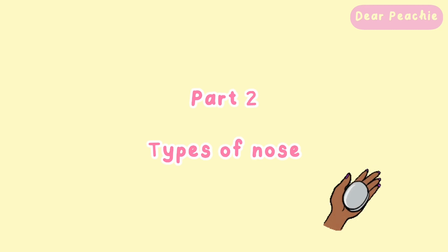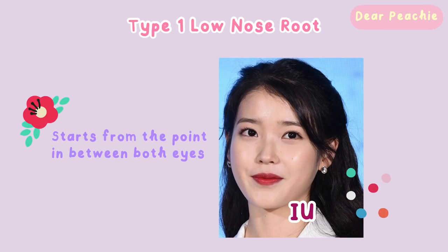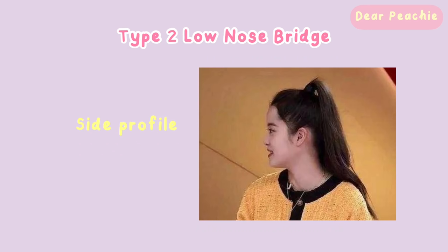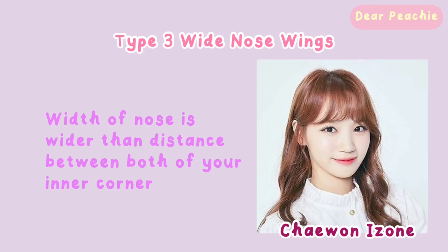This video is for educational purposes only. Here we have summarized the features of different nose types. Type one — low nose root: the exact location of the nose root starts at the point between both eyes; if you have a low nose root, your nose bridge will start below the level of your eyes. Type two — low nose bridge: if you have a lower nose bridge, you will usually face the issue of low nose root too.